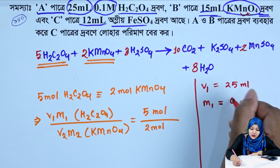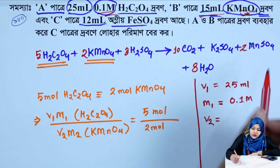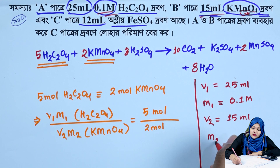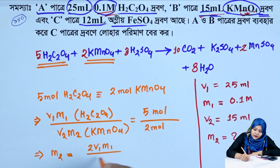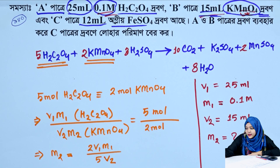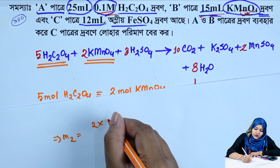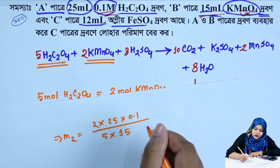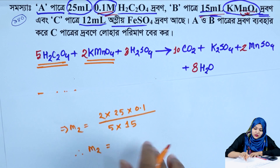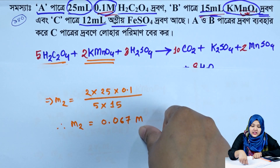The value of V1 is 25 mL, M1 is 0.1 molar, V2 is 15 mL (potassium permanganate drop). M2 is equal to 2 into V1 M1 divided by 5 into V2. M2 equals 2 × 25 × 0.1 divided by 5 × 15. M2 is equal to 0.067 molar. The molarity of potassium permanganate solution is 0.067 molar.